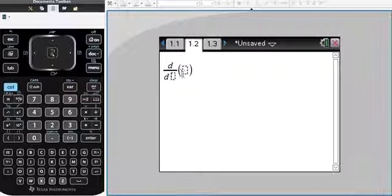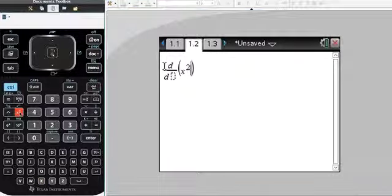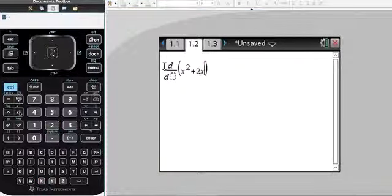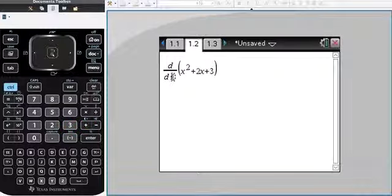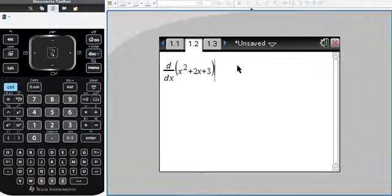You can see here the differential operator d/dx. The function we looked at in worked example 3 was x squared plus 2x plus 3. We differentiate with respect to the variable in the function, which is x. So we type an x into that box and press enter.